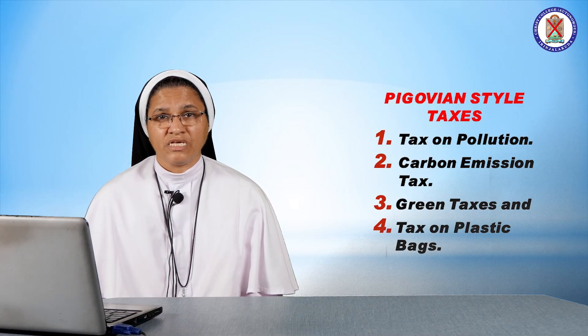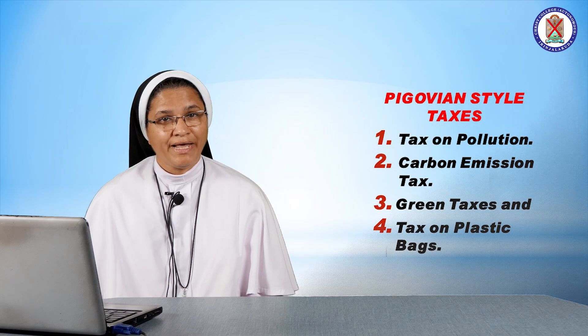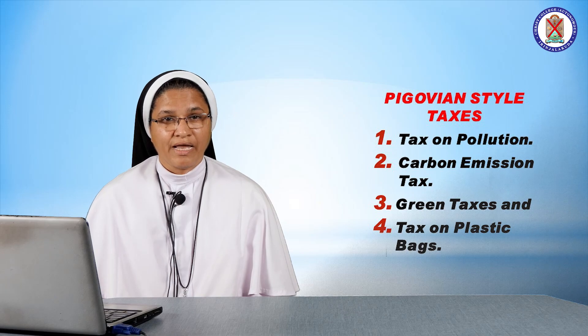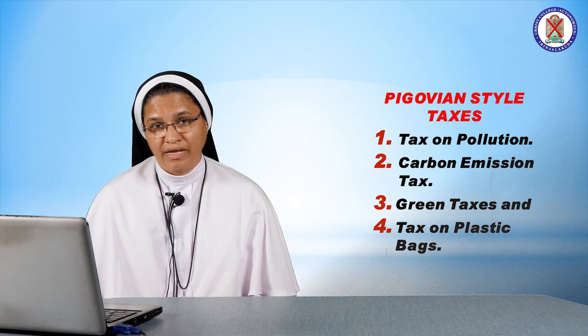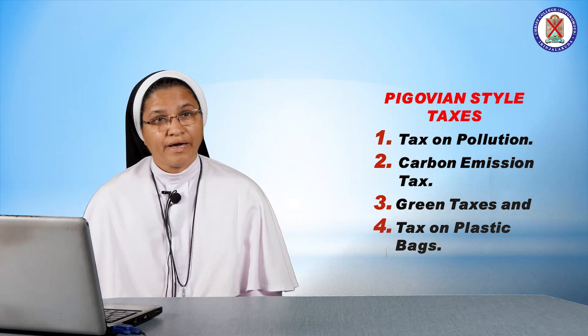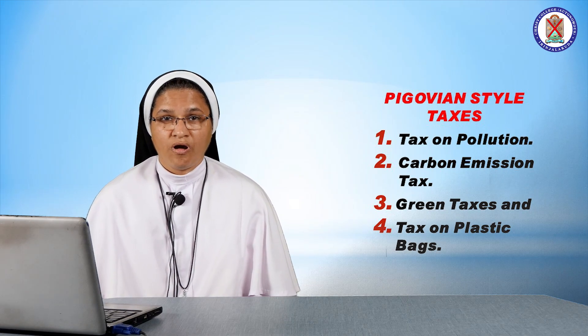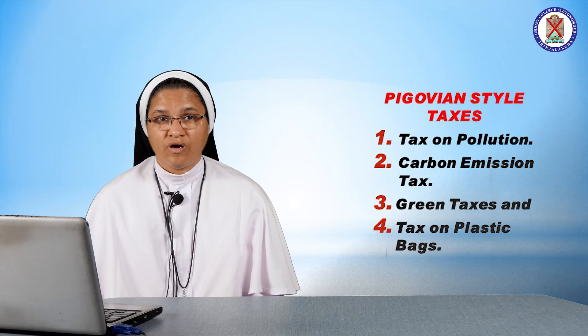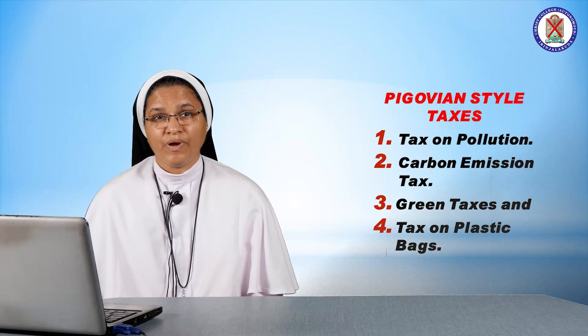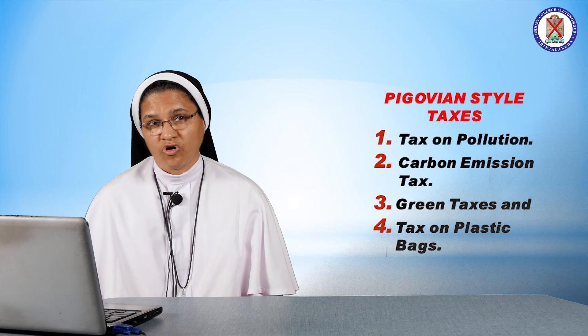The second type is carbon emission tax. The carbon emission tax is intended to factor in the cost of burning fossil fuels, which is paid by society. As of 2009, up to 29 countries have implemented carbon taxes. In India, it was levied in 1982 but was reformed in 2003. The third type is green taxes, also called environmental taxes or eco-taxes. The last type is the tax on plastic bags, which is implemented in Europe against the use of plastic bags.